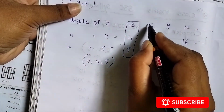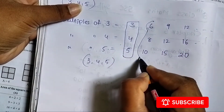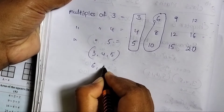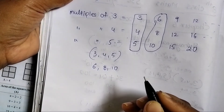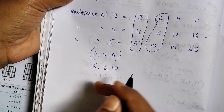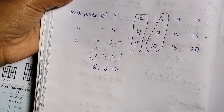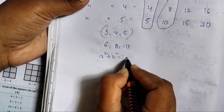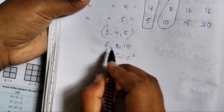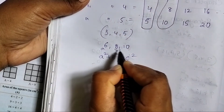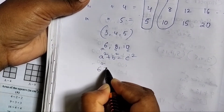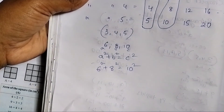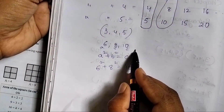Let's check 6, 8, 10. The condition is a square plus b square is equal to c square. A is 6, B is 8, C is 10. 6 square plus 8 square is equal to 10 square. This condition is satisfied, so this number is a Pythagorean triplet.